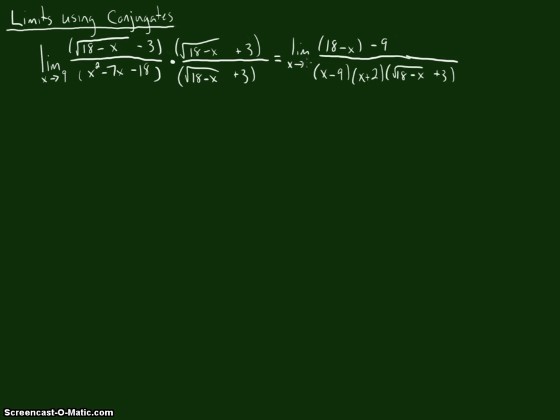So now we have our limit, and we have multiplied by a conjugate. Let's go ahead and clean this up a little bit more. So we have a limit of, and 18 minus 9 is just going to be 9 minus x on the top. On the bottom, we have an x minus 9, an x plus 2, and that conjugate factor. So here's the trick.